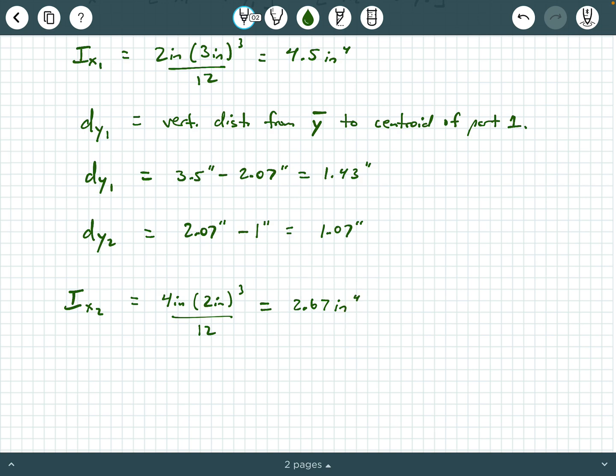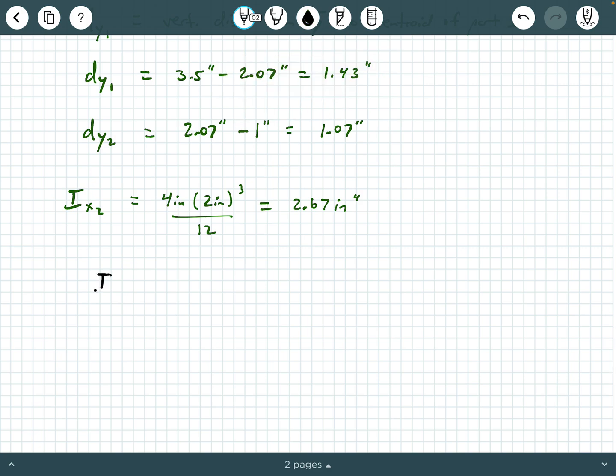So now we can put all of this together and we can finally say I sub X is going to be 4.5 inches to the fourth plus 6 inches squared times 1.43 inches quantity squared. Watch your parentheses here. Plus open 2.67 inches to the fourth. Watch these units plus 8 square inches times 1.07 inches squared. Remember, you got to square the units and square the number as appropriate. So make sure you get the same number. I get 28.6 inches to the fourth.